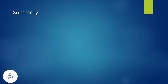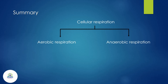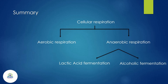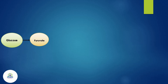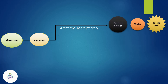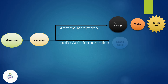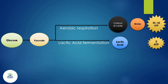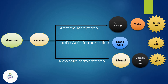Let's see the summary of what we have learned today. There are two types of cellular respiration: aerobic respiration and anaerobic respiration. Anaerobic respiration is of two types: lactic acid fermentation and alcoholic fermentation. First, glucose is degraded to form pyruvate. In aerobic respiration, pyruvate is oxidized to form carbon dioxide, water, and 30 to 32 molecules of ATP. In lactic acid fermentation, pyruvate is converted to lactic acid and two molecules of ATP. In alcoholic fermentation, pyruvate is converted to ethanol, carbon dioxide, and two molecules of ATP.